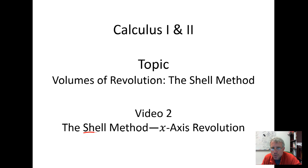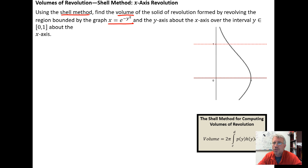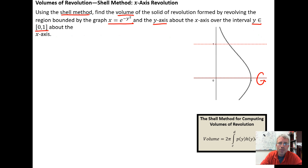In this video we want to use the shell method to find a volume of revolution when we do an x-axis revolution. The example says: using the shell method, find the volume of the solid of revolution formed by revolving the region bounded by the graph x equals e to the negative y squared and the y-axis about the x-axis, over the closed interval y in [0, 1].